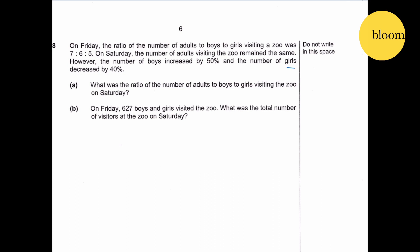Question number 8. On Friday, the ratio of the number of adults to boys to girls visiting a zoo was 7 is to 6 is to 5. On Saturday, the number of adults visiting the zoo remained the same. However, the number of boys increased by 50 percent and the number of girls decreased by 40 percent.